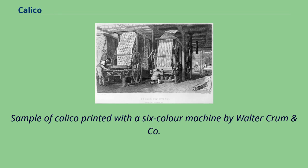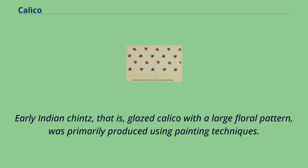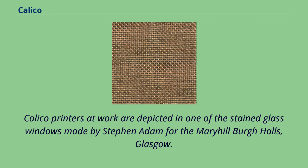Sample of calico printed with a six-color machine by Walter Crum and Company, from Frederick Craze Calvert's Dyeing and Calico Printing. Early Indian chintz — glazed calico with a large floral pattern — was primarily produced using painting techniques. Later, the hues were applied by wooden blocks, and cloth manufacturers in Britain printed calico using wooden block printing. Calico printers at work are depicted in one of the stained glass windows made by Stephen Adam for the Mary Hillburg Halls, Glasgow.